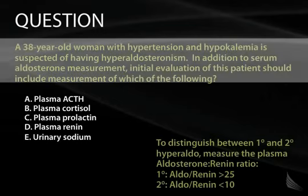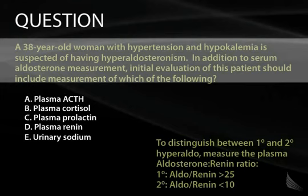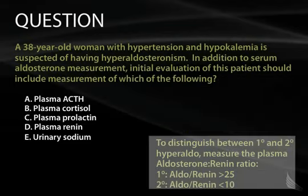A 38-year-old woman with hypertension and hypokalemia is suspected of having hyperaldosteronism. In addition to serum aldosterone, initial evaluation should include measurement of renin — you always want a paired aldosterone-renin level. In primary hyperaldosteronism, aldosterone is high and renin is suppressed, so the aldosterone-to-renin ratio will be high, typically above 25. In secondary hyperaldosteronism, renin is the primary driver, so the ratio will be low, usually below 10.